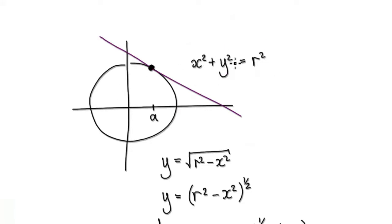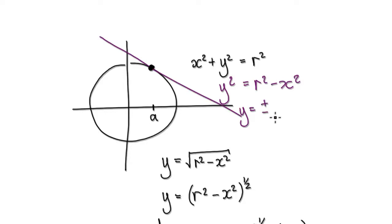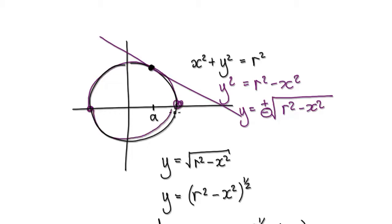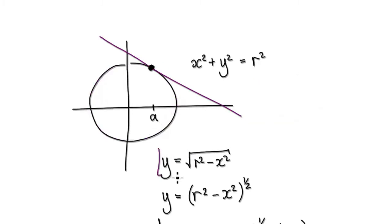Let's make y the subject. Take away x squared from both sides, and then square root both sides. When you square root both sides, you will get the positive version and the negative version. The positive version is this strand here, and the negative version is this strand here. Let's forget about the negative version and consider only the positive version — just this strand only.